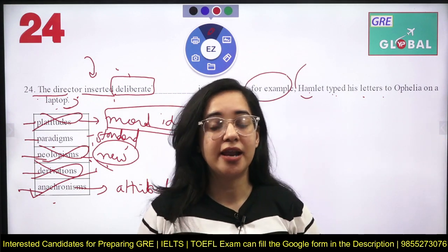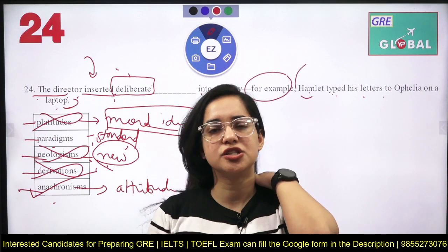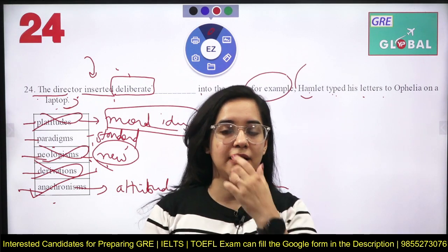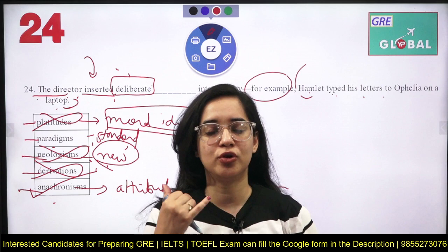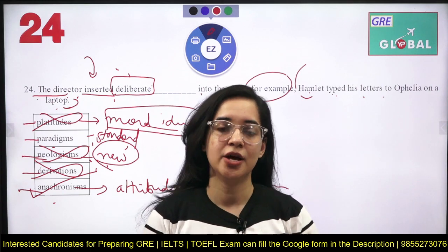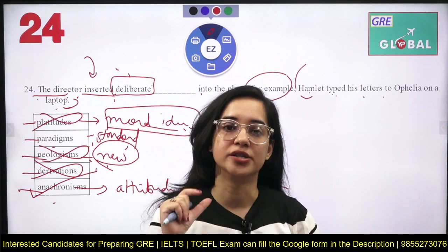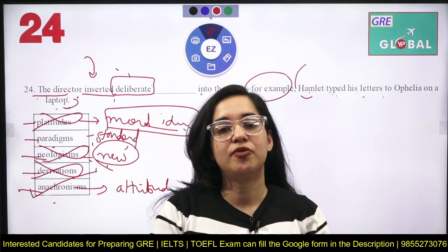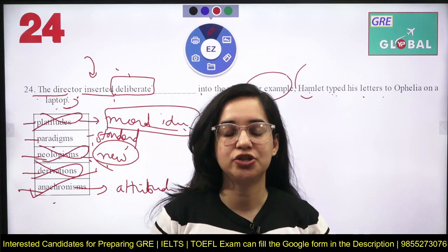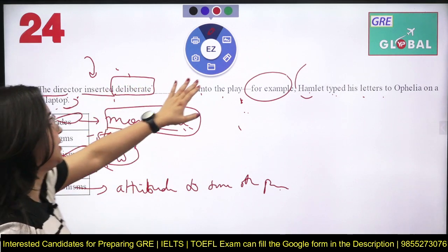So the answer is Anachronism. Like if we review an old movie and the characters are using phones when phones didn't exist then — that is anachronism. When you try to fit a word or object which does not belong even to that century, that is anachronism. Don't forget this word — it's very important.